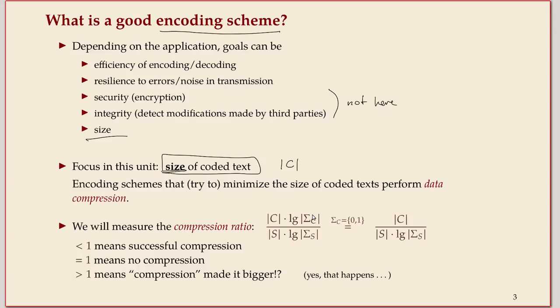You take the log of the size of the alphabet. The logarithm of the alphabet size gives you the number of bits needed to specify one character. The compression ratio is the total length of the coded text divided by the total length of the source text defined this way. If the alphabet is binary, the log is just one so it goes away.